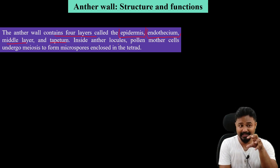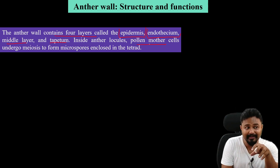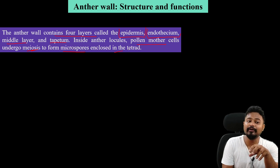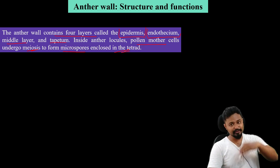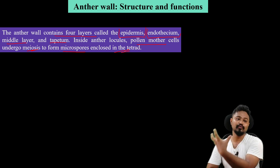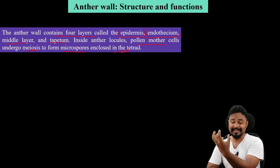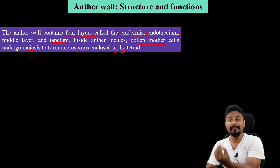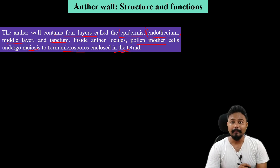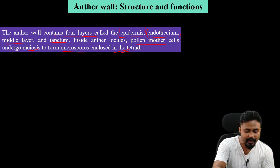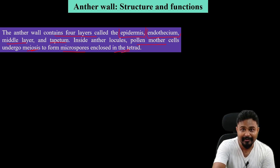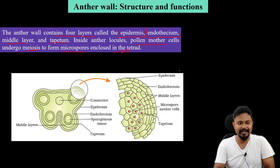So this is an important point: the pollen mother cells undergo meiosis to form microspores enclosed in a tetrad. So pollen mother cells produce microspores. These are the anther wall layers and their functions.